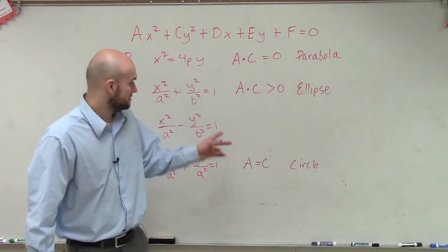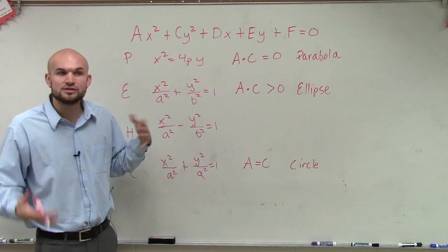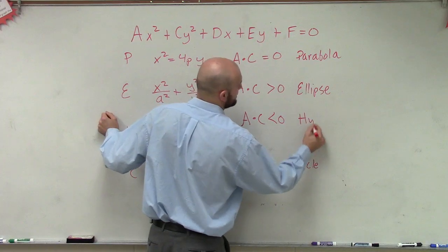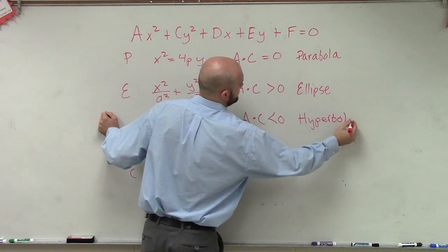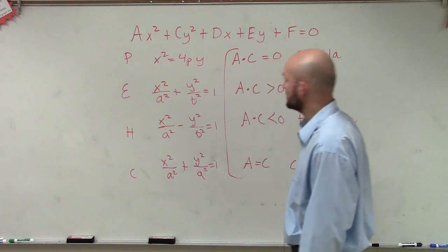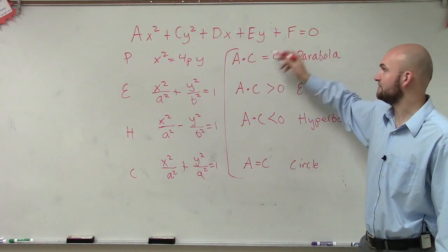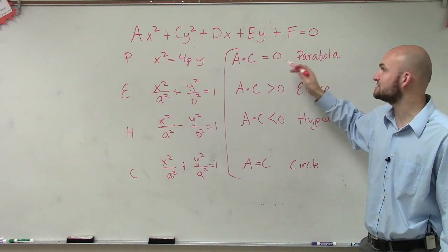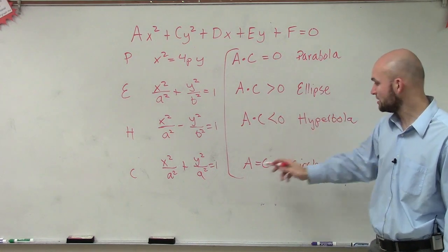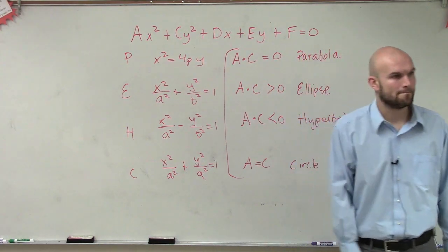For a hyperbola, remember it was subtracting. So what you really have is a positive coefficient times a negative coefficient. That means if a times c is less than 0, then you have a hyperbola. So to summarize: a times c equals 0 means you have a parabola; a times c greater than 0 means you have an ellipse; a times c less than 0 means you have a hyperbola; and if a is equal to c, then you know you have a circle when it's in this format.